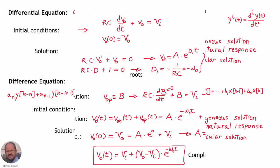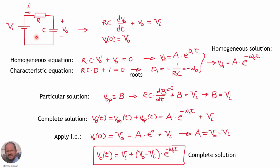Let's recall how to solve a differential equation — for example, the response of an RC circuit supplied with DC voltage and with an initial voltage at the capacitor equal to V sub zero. We solve the homogeneous equation, which is the differential equation set equal to zero by removing the excitation. The homogeneous solution is a constant times the exponential function of the root of the characteristic equation times time.